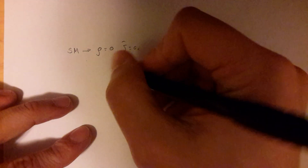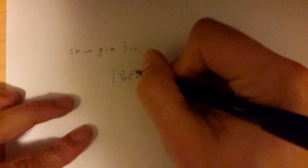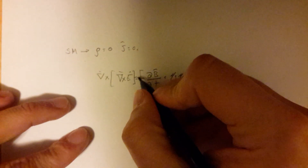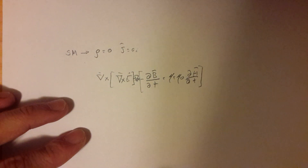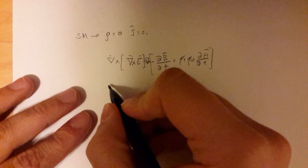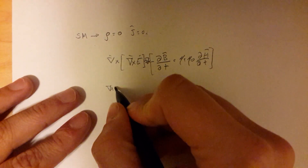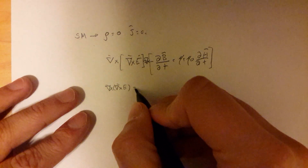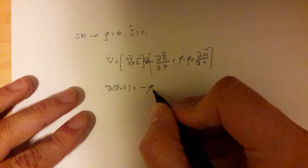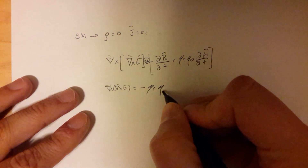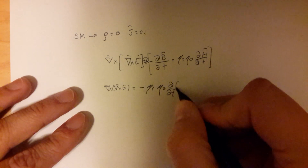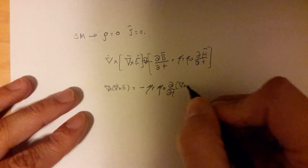Our next step is taking the curl of both sides of the equation, which gives us the curl of the curl of E equals minus mu_R mu_0 times the time derivative of the curl of H.